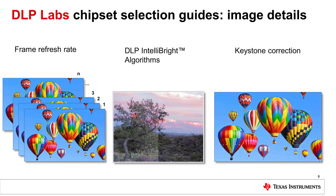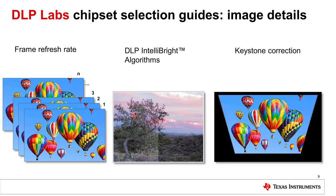Keystone correction is used when the optical axis of a projection system is not perpendicular to the screen, resulting in a geometrically distorted image. The keystone distortion can be corrected optically, which is very difficult, cost prohibitive, and is not adjustable, or by image processing. DLP controllers provide keystone correction by remapping the input image to the DMD array in such a way as to produce a rectangular image at the screen.